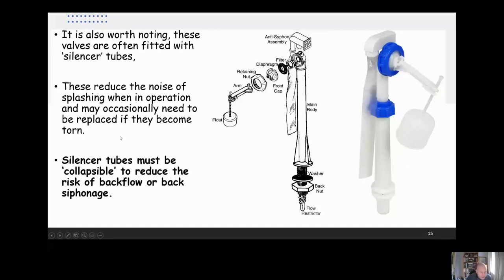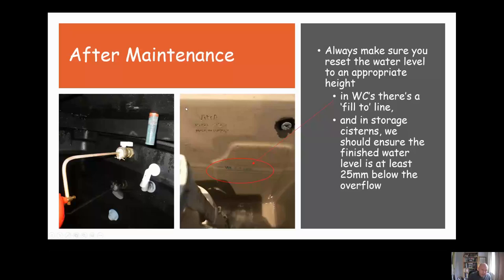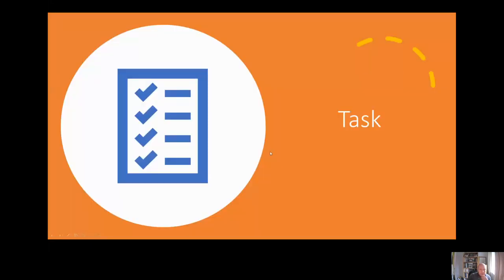Finally, after maintenance, always make sure that you reset everything back to its appropriate height. If the system is feeding a hot water cylinder and you set the water level too high, when that water heats up it'll expand and could potentially cause it to overflow. You also need to make sure that in WCs you set up to the six liter line, because that's the appropriate level to meet the water regs. Don't go past the six liter line maximum, six liter flush we should have for WCs. Okie dokie, now it's time for your task.